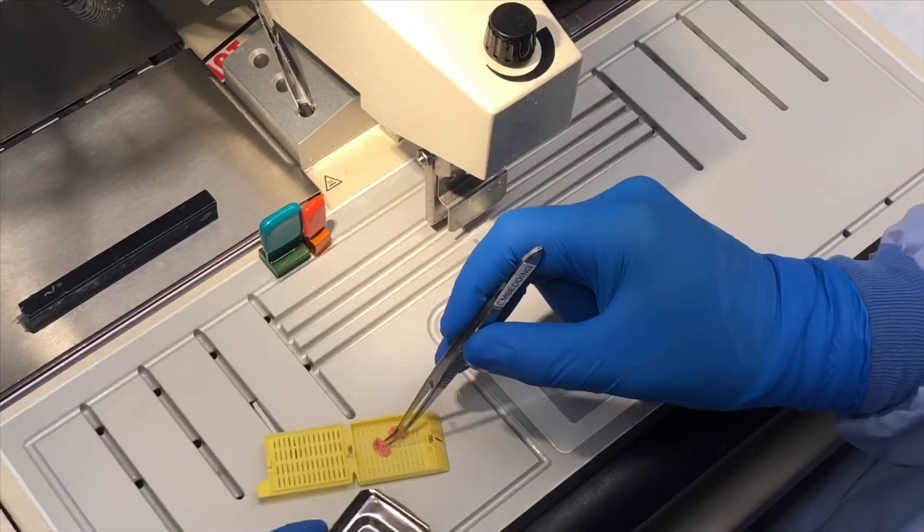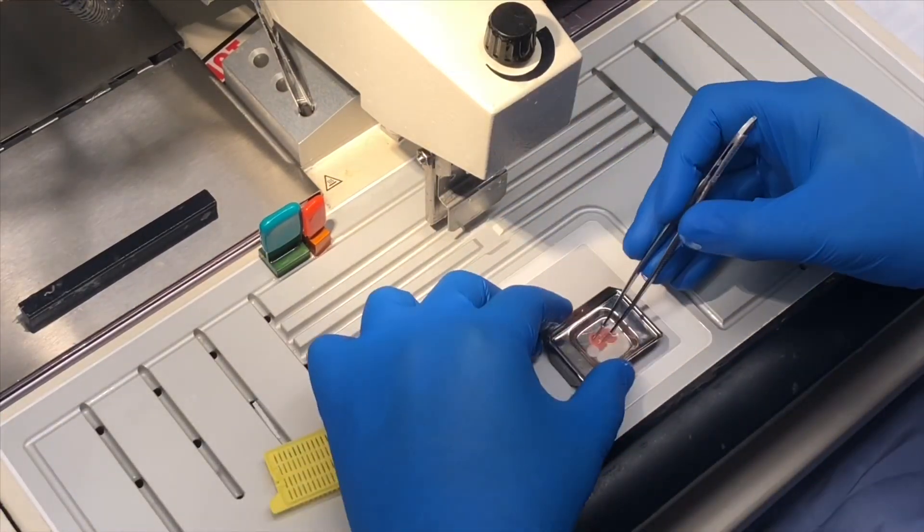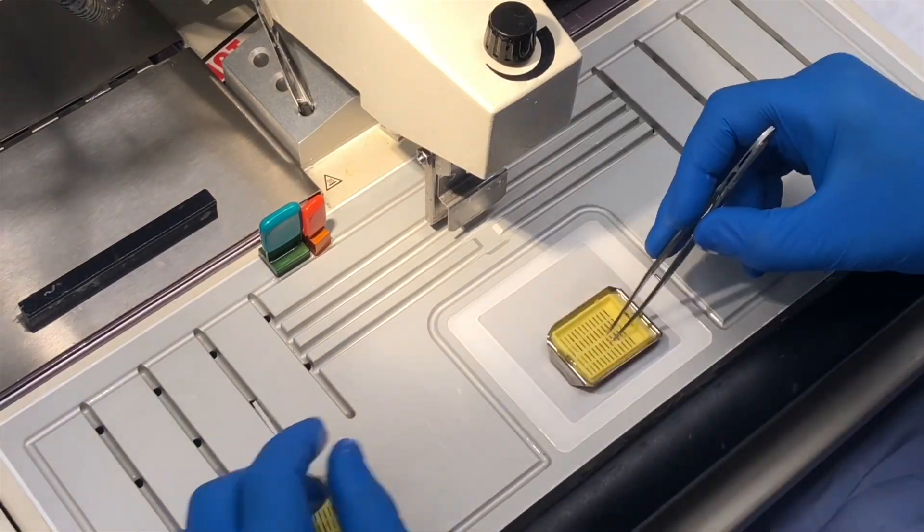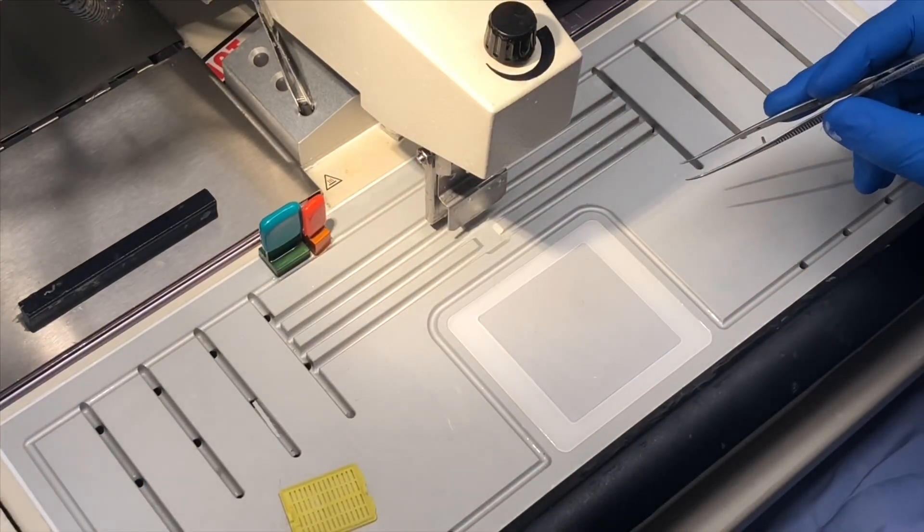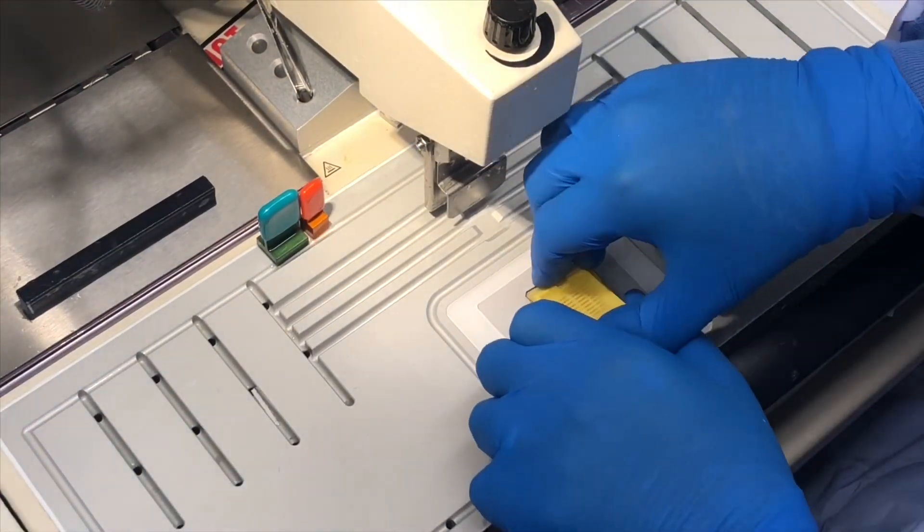The tissue is removed from the cassette and put into molten wax, and is placed onto a cold plate in order for them to chill. Once the block is cold enough, it will be removed from the mold.